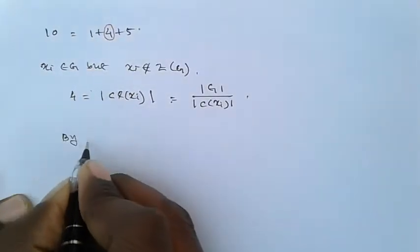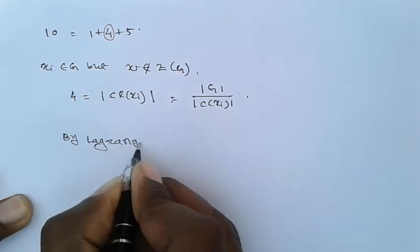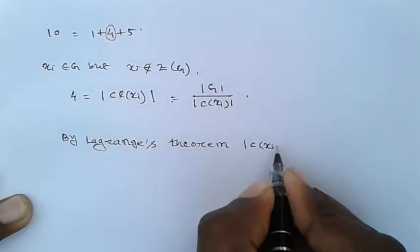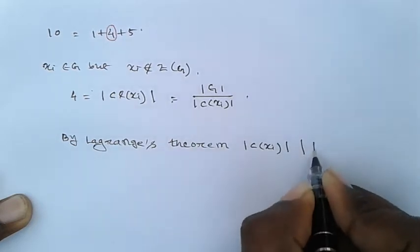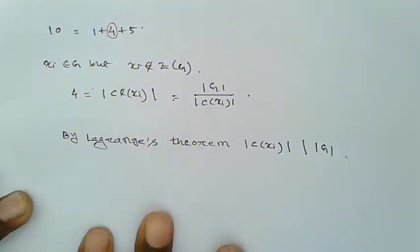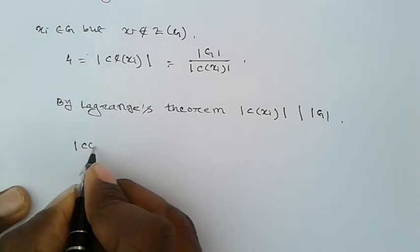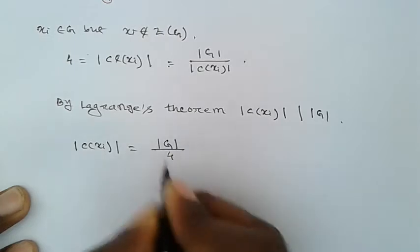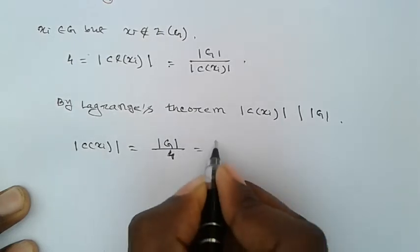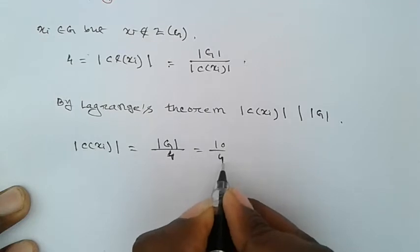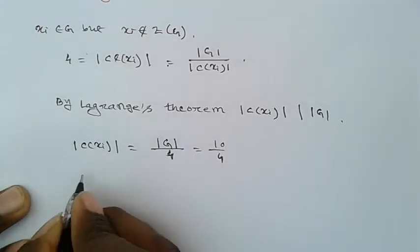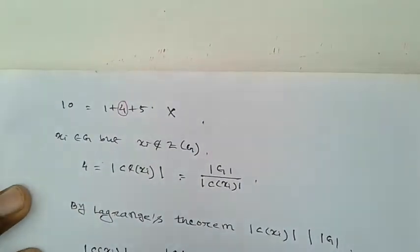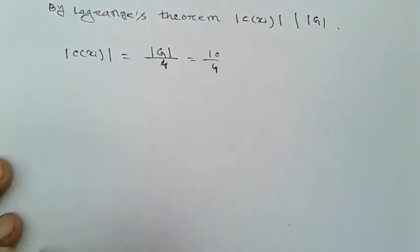By Lagrange's theorem, the order of C(x_i) divides the order of G. However, if the class size is 4, then the order of C(x_i) equals 10/4, which is not a whole number. Since 4 does not divide 10, this class equation does not exist. Therefore, the first option is not a valid class equation.